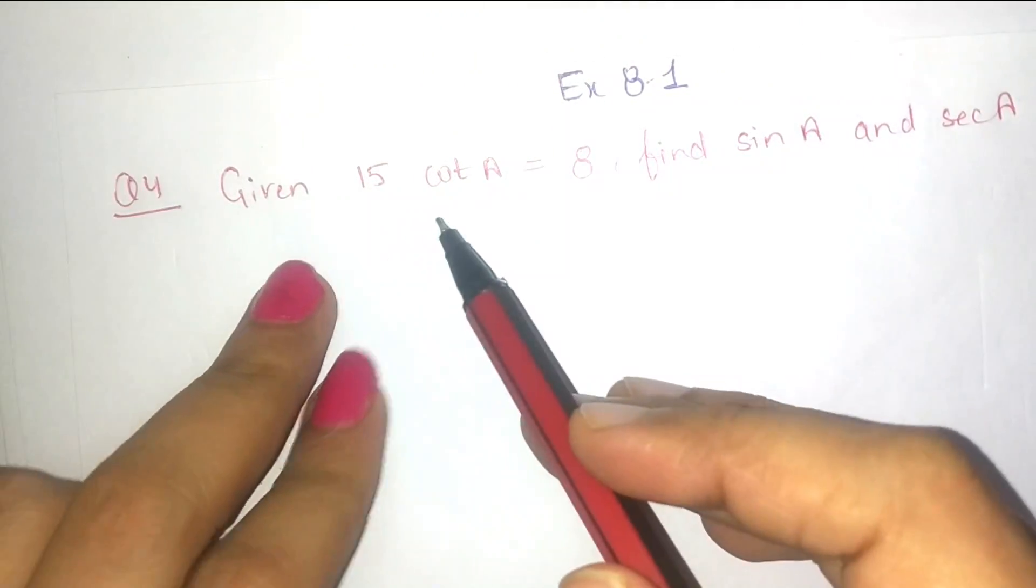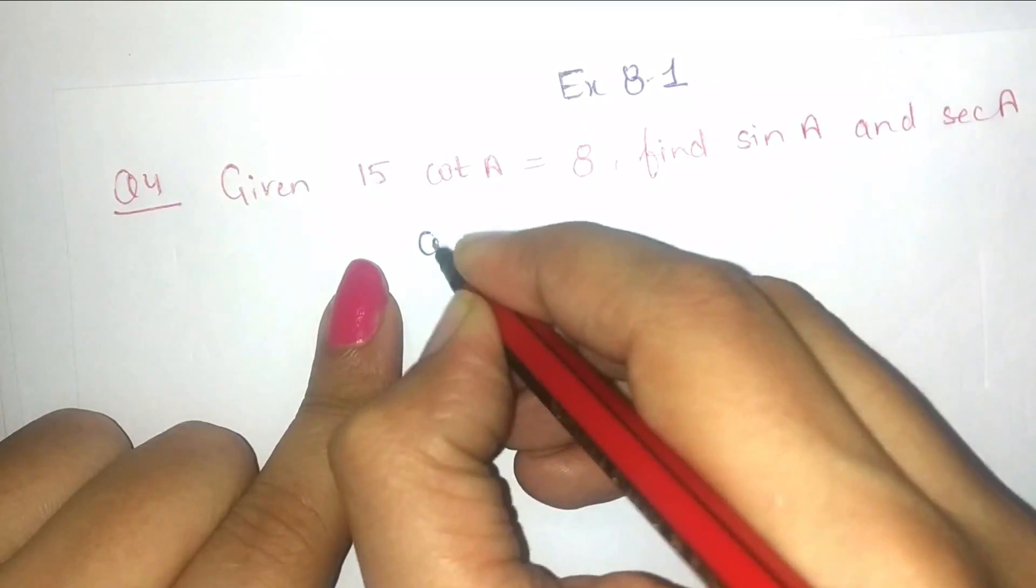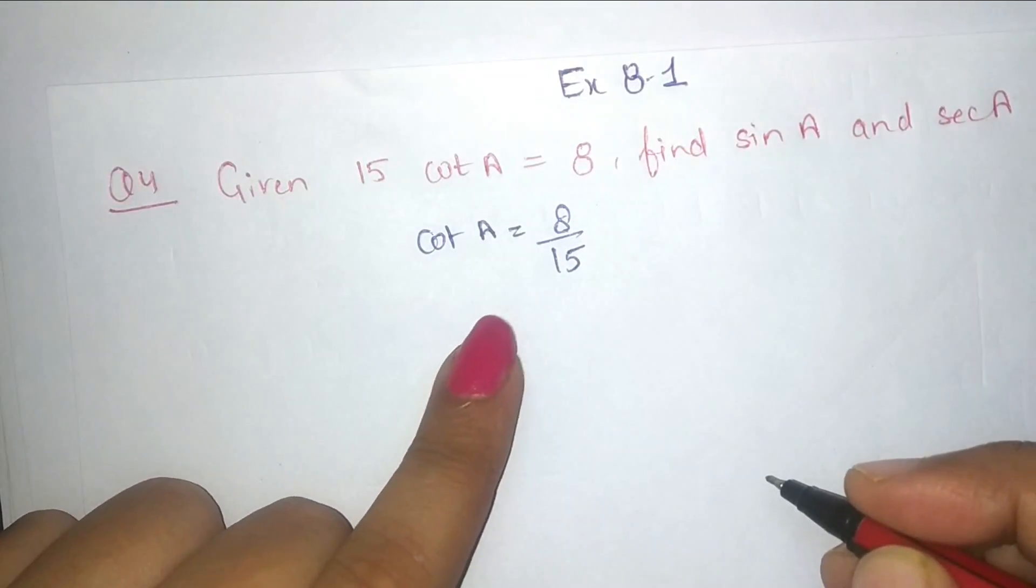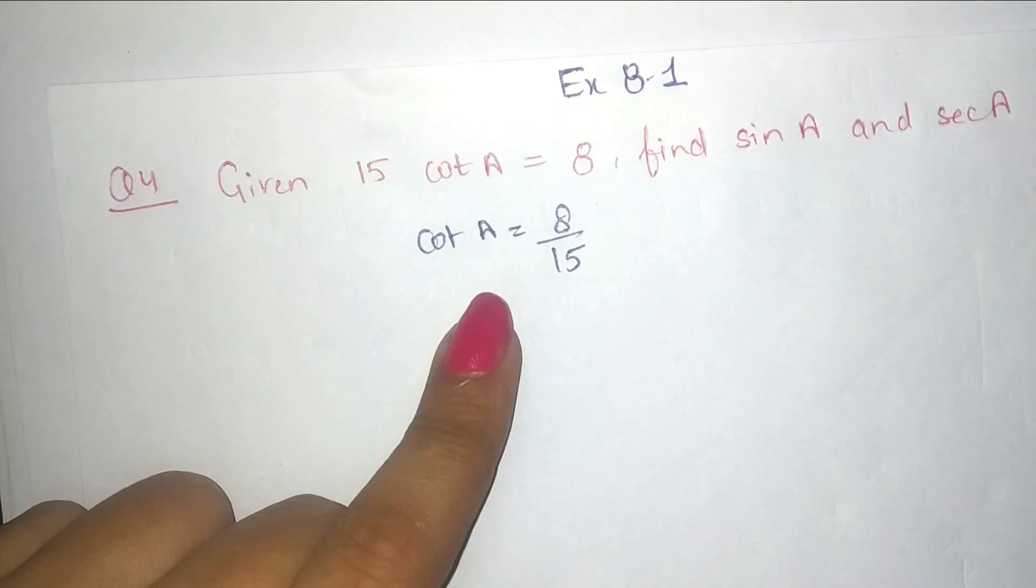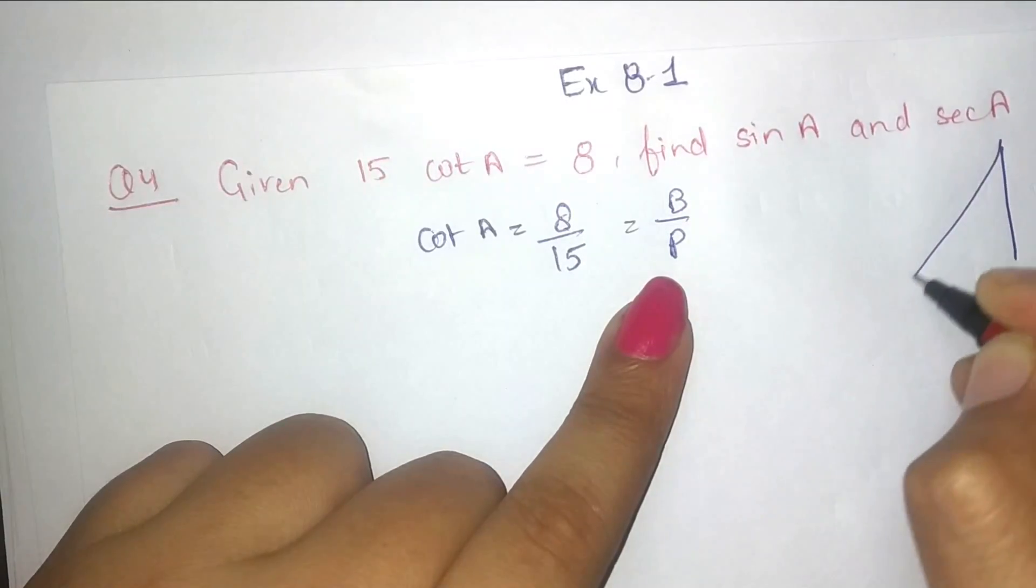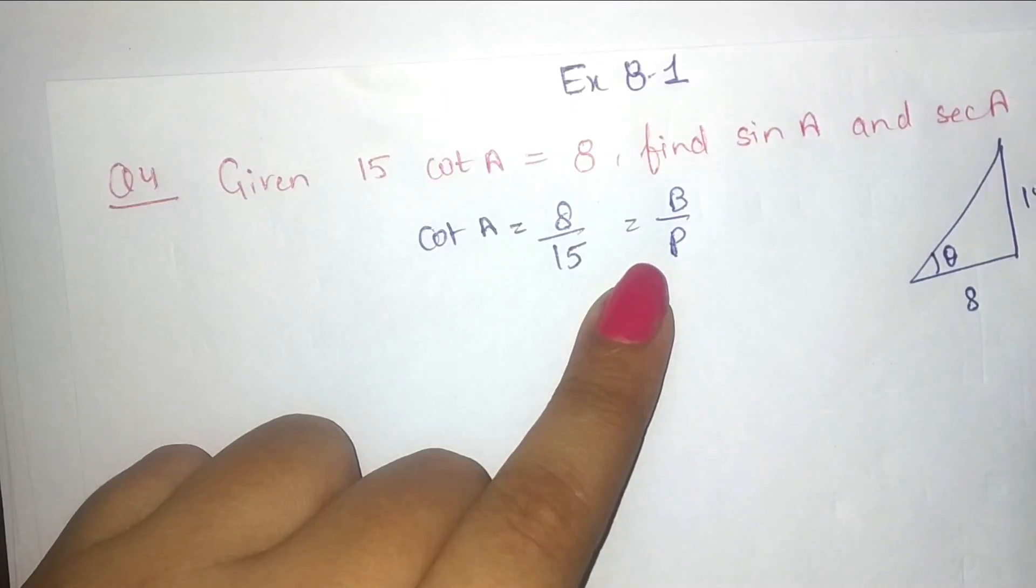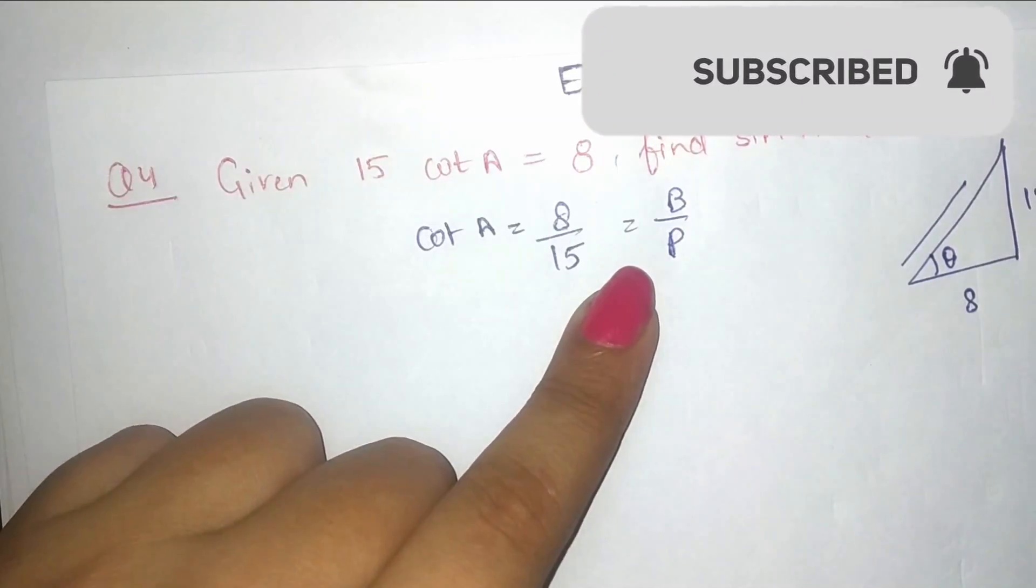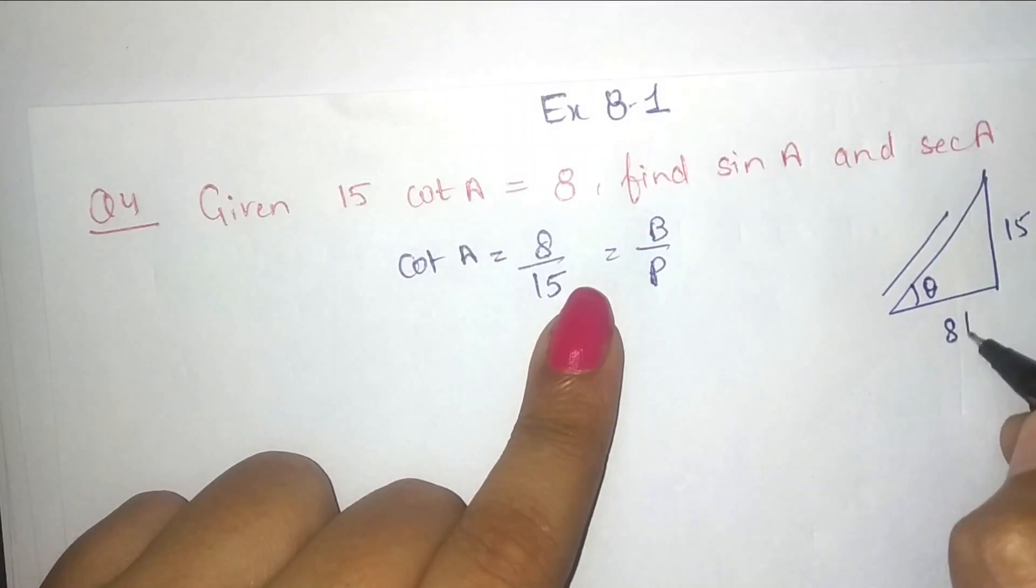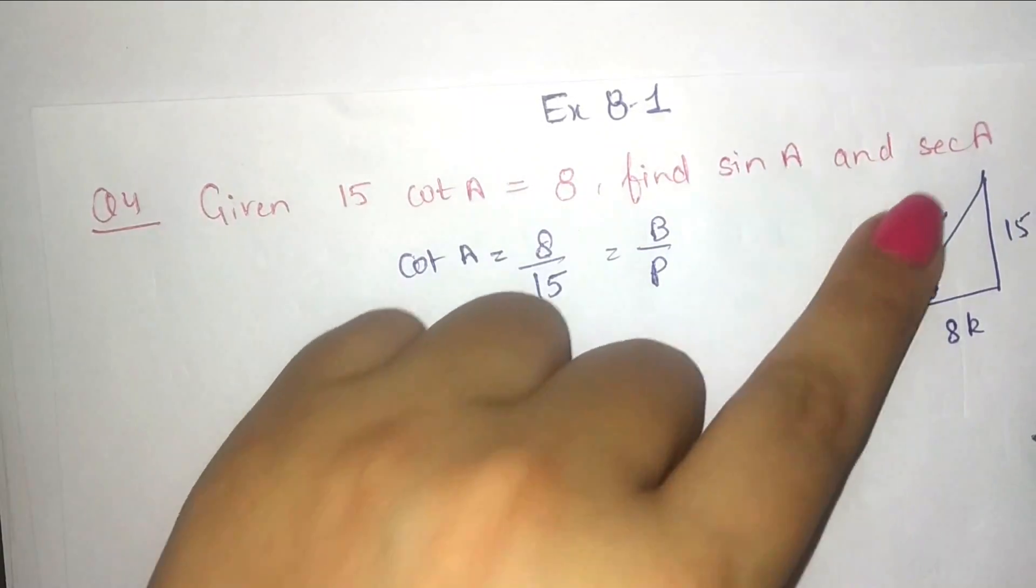Let's start question number 4. Given 15 cot A is equal to 8, find sin A and sec A. So how can we assume cot A values? Cot A is equal to 8 upon 15. So cot A's values are B upon P. It means in this triangle, this is the theta, base is given 8, perpendicular is given 15. We need to find out this edge, hypotenuse. So base, it means this is in the form of ratio, what do we do? We suppose we will do 8k and 15k. And by applying Pythagoras theorem you will get this edge.